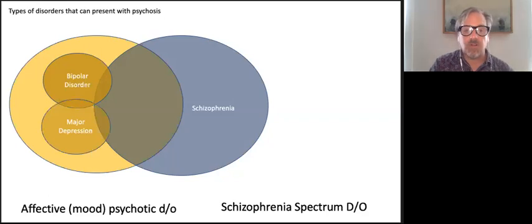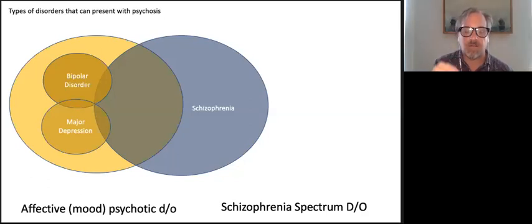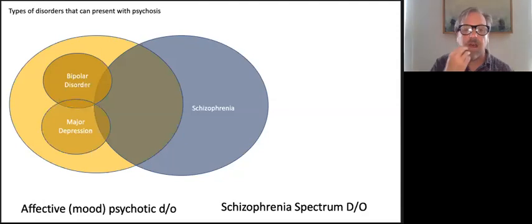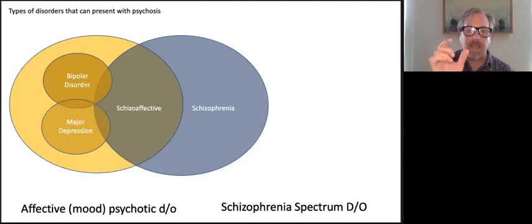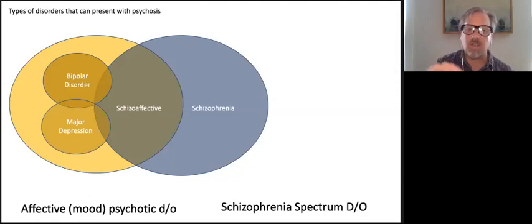We can also see psychotic symptoms in major depression. Similarly to the bipolar depressive presentation, these can have a very negative affective tone and tend to present with significant vegetative symptoms. This is where somebody will have a very hard time thinking clearly and will have a lot of what we call negative symptoms. When these two overlap and the psychotic symptoms persist throughout mood episodes — whether the person is in a stable, elevated, or depressed mood — we call this schizoaffective disorder.